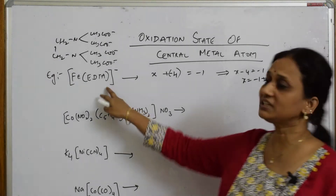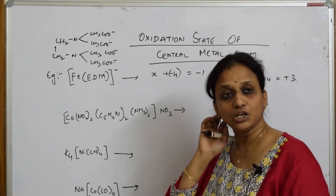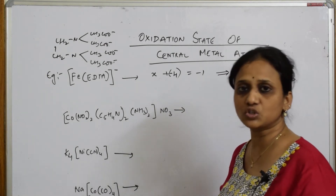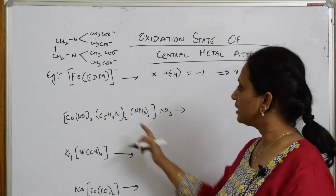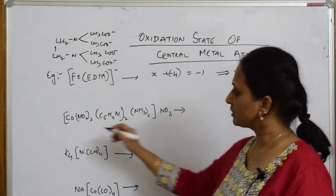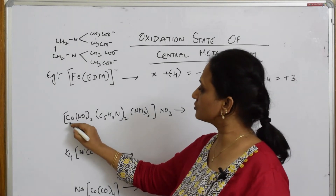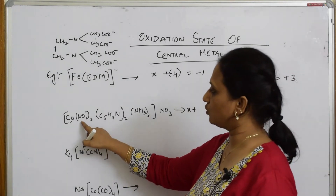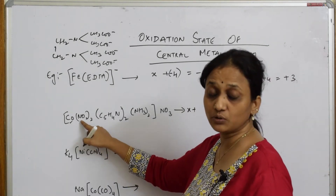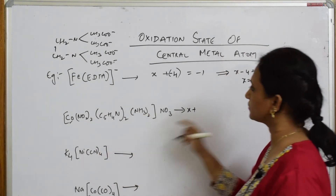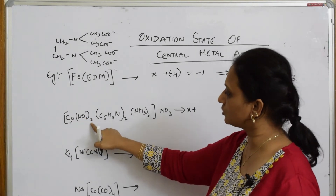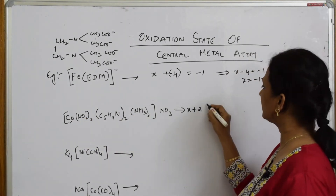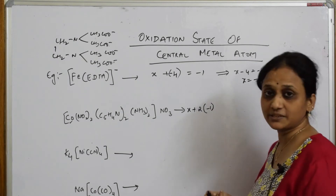Be careful with ligand charges — go to that video for clarity. Now for the next example: we need to calculate the oxidation state. Put X for the metal. NO2⁻ has a charge of minus 1, and there are 2 of them, so that contributes 2 × (−1).